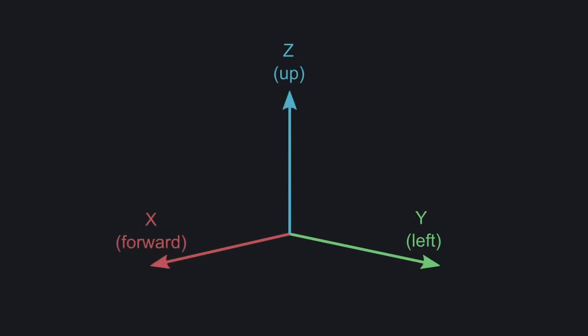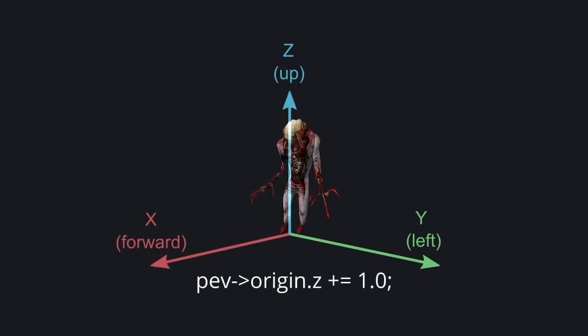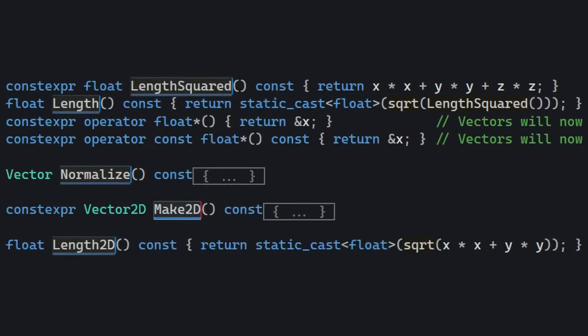So if you increment pep origin Z, your entity is going to start going up in the air. The vector class has a number of methods you can use, like length, normalize, and some utility functions like dot product and cross product.